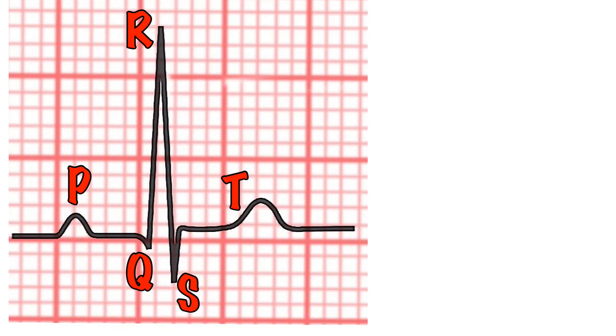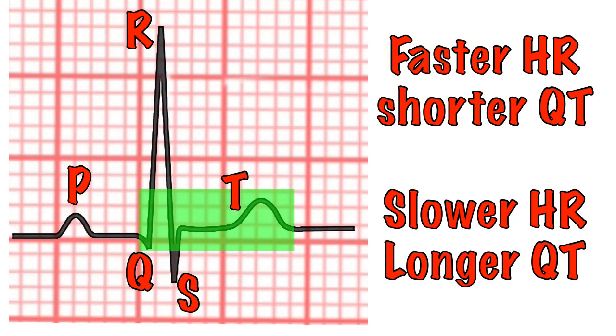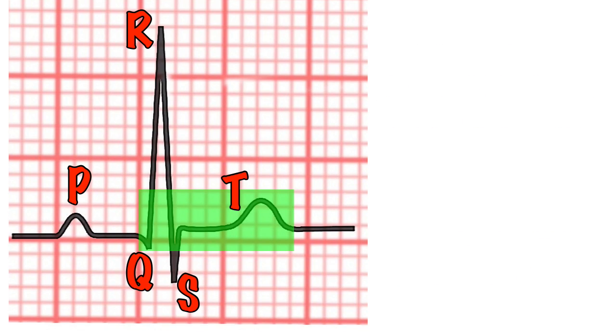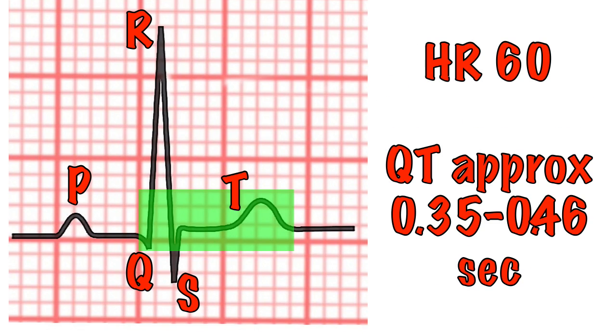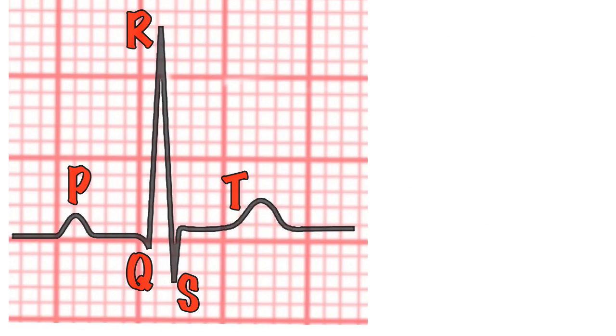It's harder to define a normal for the QT interval, which is measured from the beginning of the Q wave to the end of the T wave, as it varies inversely with the heart rate. Roughly speaking, at 60 beats per minute, the interval should be between 0.35 and 0.46 seconds, but it's far more complicated than that.